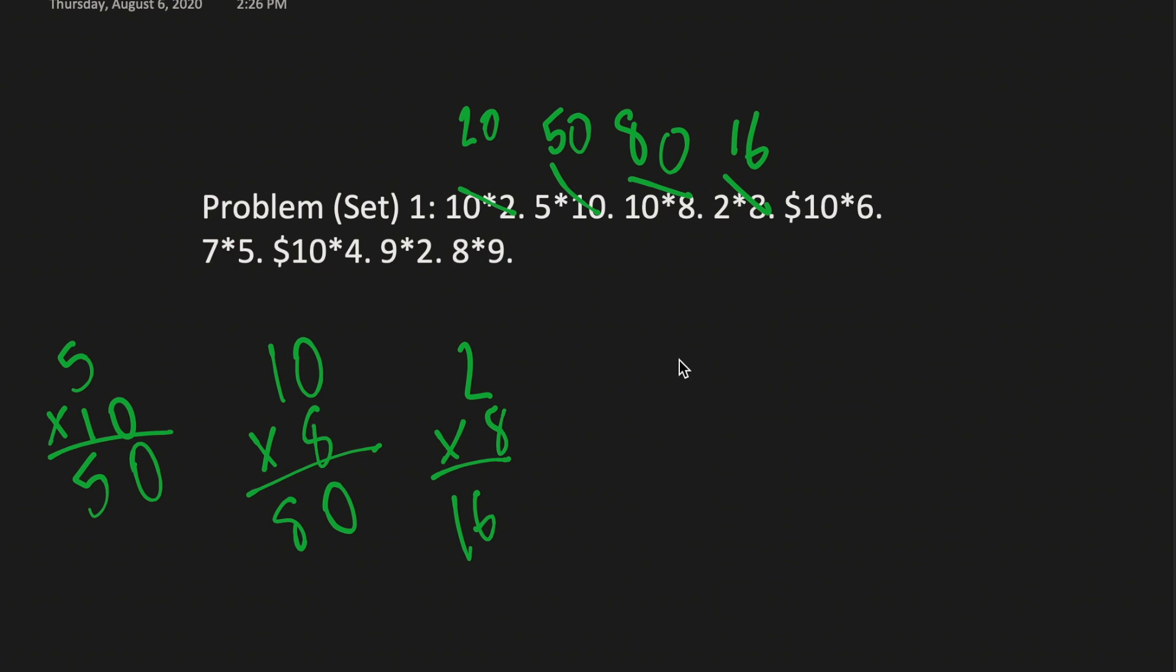$10 times 6. You can just do 10 times 6 but you need to add the dollar sign later. So 6 times 1 is 6 and 6 times 0 is 0. So $60.